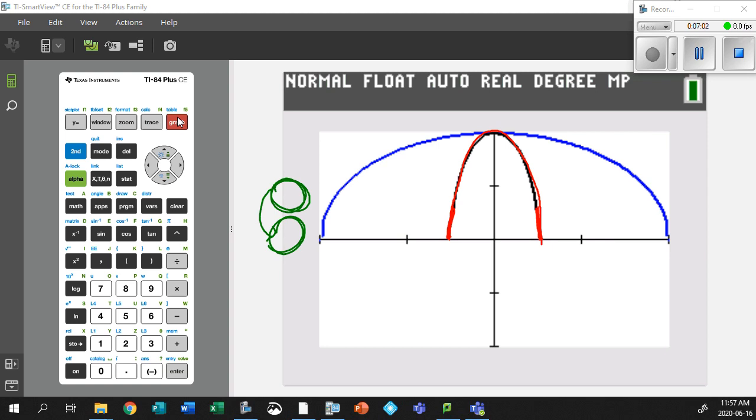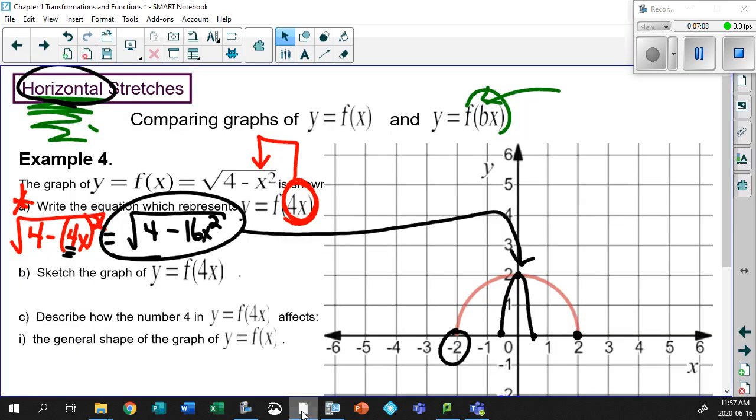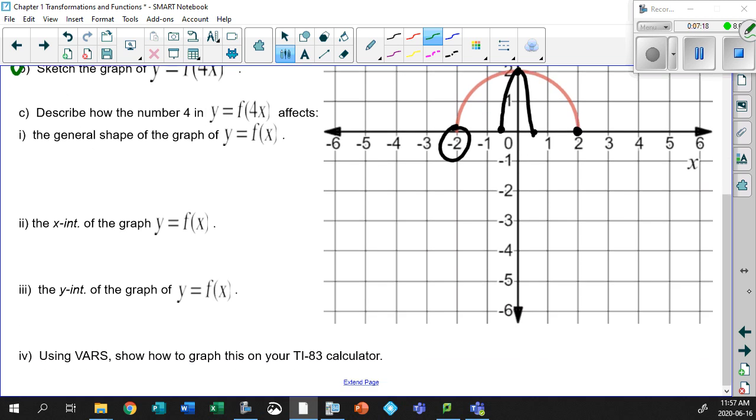Isn't that cool? I love this. This is so neat. So we learned a lot just by playing around with our calculators. So let's go back to this. Sketch the graph. Well, we did that. We did the equation. Let's talk about this now. Let's talk about the rest of the question. The rest of the question says, describe how the number 4 in this equation affects things. Number 1 affects the general shape.